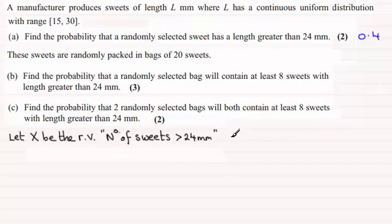So what kind of distribution will X have? Well, what we've got here is a finite number of trials, 20. And we can see that the probability of getting a sweet with a length greater than 24 millimeters was found in part A to be 0.4. And events occur at random.